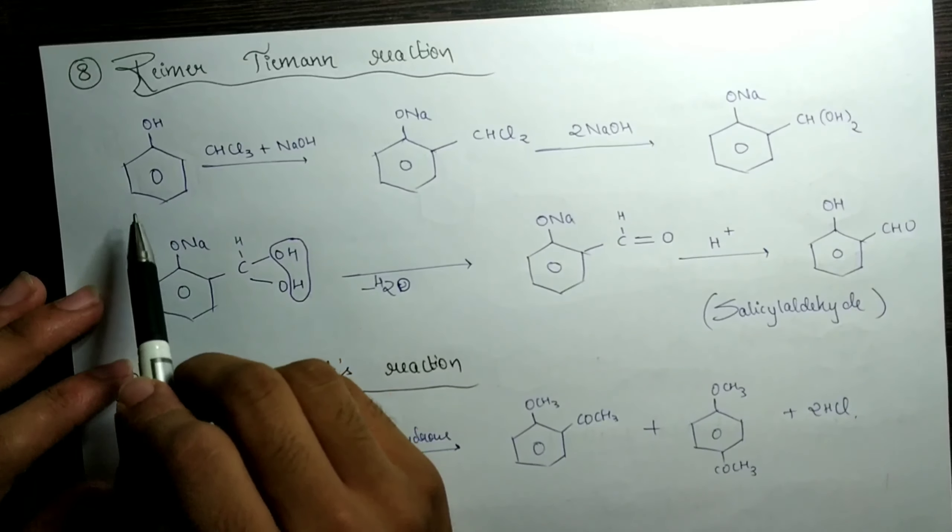The eighth reaction is the Reimer-Tiemann reaction. This is also very important and can be asked for two marks or even as a sub-question in five marks. We begin with phenol again and make it react with CHCl₃, which is chloroform, along with NaOH to maintain basic medium. H is replaced by Na, and CHCl₂ attaches on the ring, giving the compound I have written here.